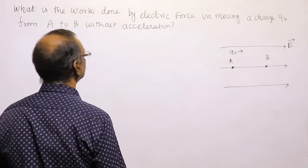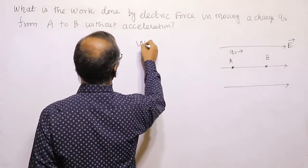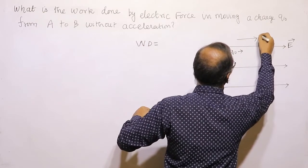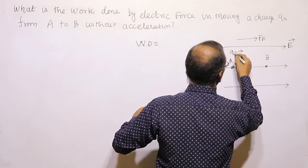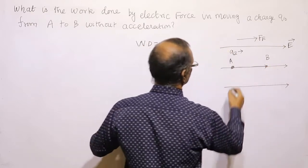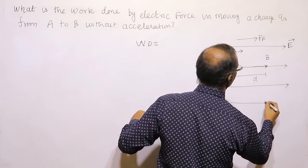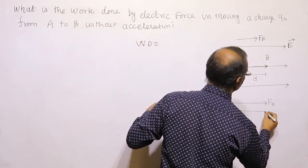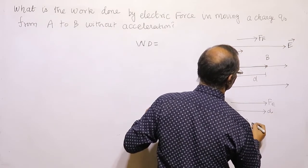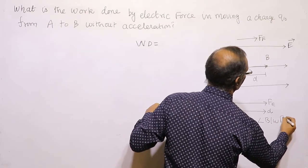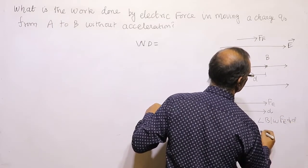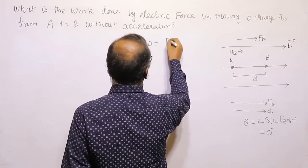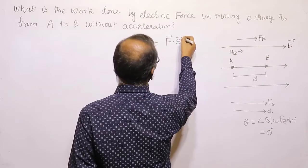Now, what is the work done? We know work done by electric force. The electric force is in this direction, and theta — the angle between F_E and displacement — is equal to 0 degrees. Work done is equal to the dot product of force into displacement, F dot S.